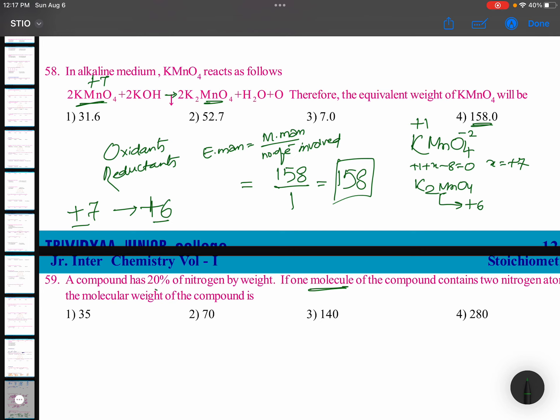See, 20 percentage of nitrogen means 100 gram of compound contains 20 gram of nitrogen. Don't think too much. Okay, very simple. 100 gram of compound contains 20 gram of nitrogen and he is saying that each molecule must contain two nitrogen atoms. Two nitrogens.